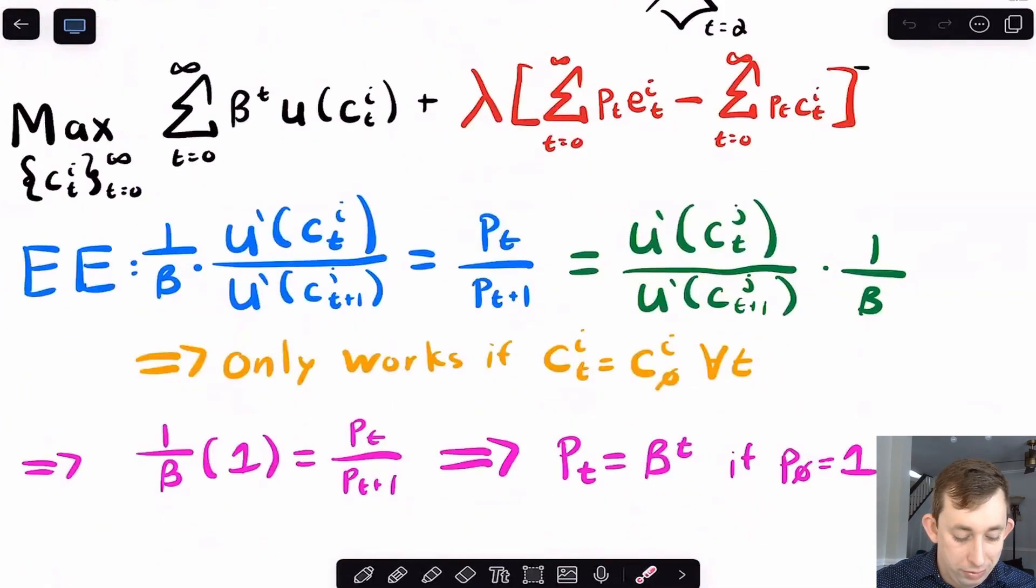We solved the utility maximization problem for an agent. We found that prices were equal to beta to the t if I normalize p0 to be one. What's going to happen is people consumption smooth perfectly, so ci,t is going to be ci,0 for all t. I've got a whole series on Arrow-Debreu equilibrium videos. Hopefully this just rings some bells and gives you a nice review of what's happening.